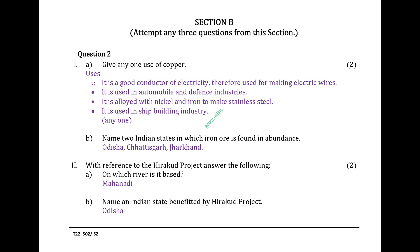It is used in the shipbuilding industry. Name two Indian states in which iron ore is found in abundance: Odisha, Chhattisgarh, Jharkhand.